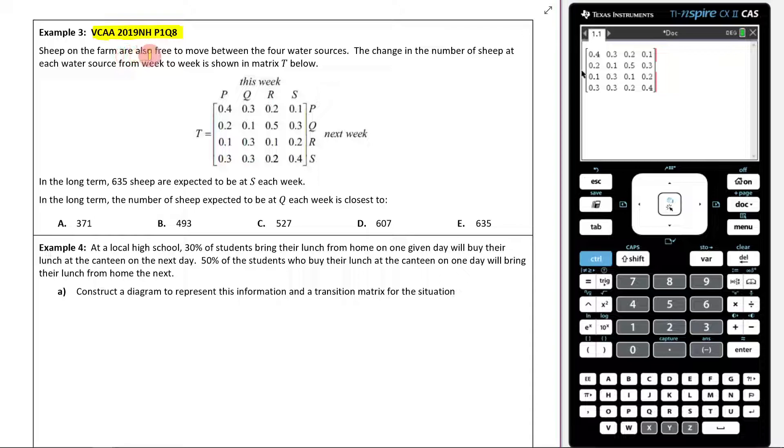Sheep on the farm are also free to move between the four water sources. The change in the number of sheep at each water source from week to week is shown in the matrix T below. If we examine a number here, for instance, this 0.2 is telling me that if a sheep this week is in water source R, then 20% of those sheep in water source R will move to water source P next week.